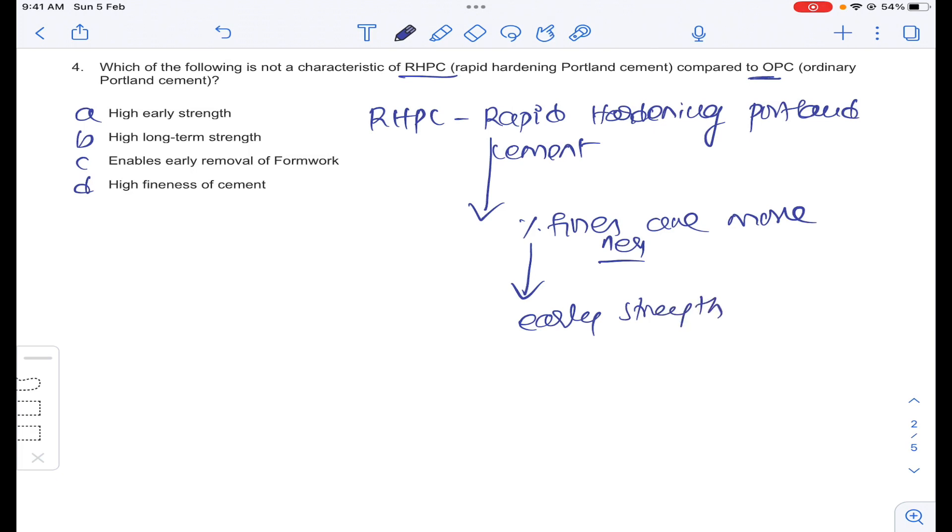Whenever the strength attained by the concrete is too early, we can remove formwork early. Enables early removal of formwork. And finally, both RHPC and OPC will be having same final strength. RHPC is not having more than OPC, not having less than OPC. Both final strength, long term strength will be same for both.